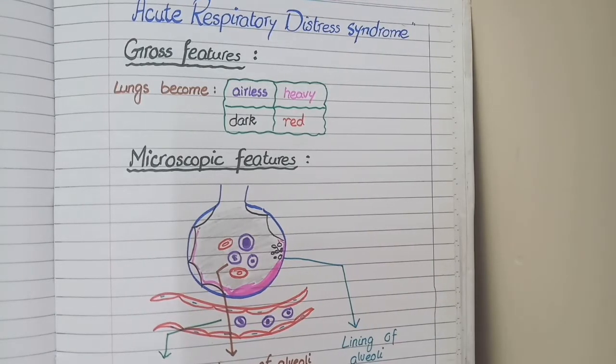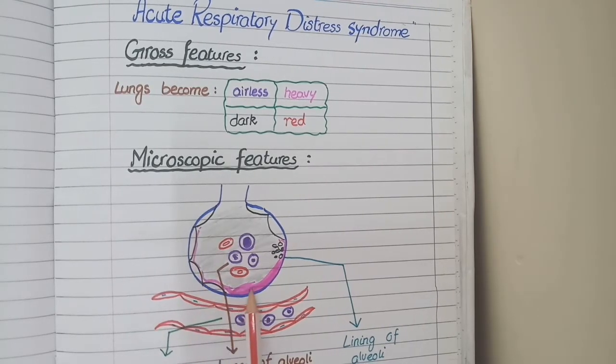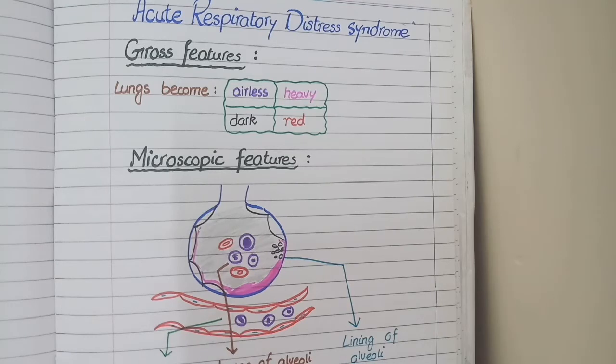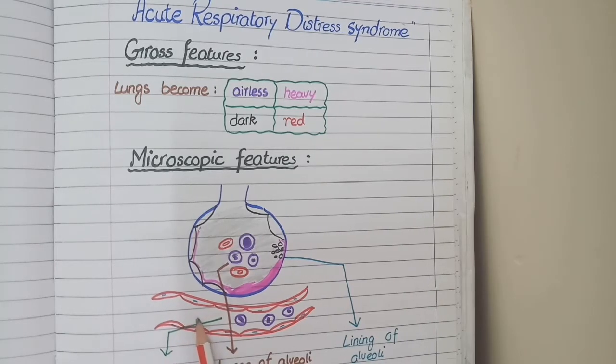This disease, acute respiratory distress syndrome, occurs when some pathological agent damages the respiratory membrane. And then the fluid and blood from the surrounding vessels or capillaries leak into the alveoli.